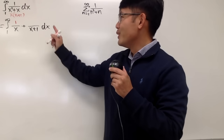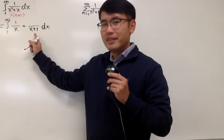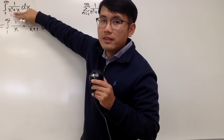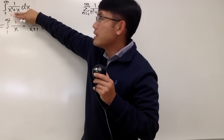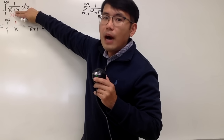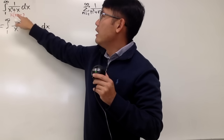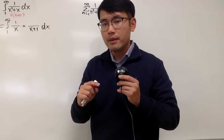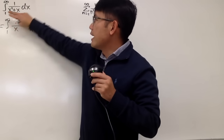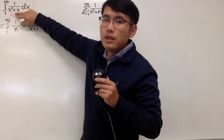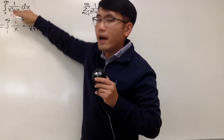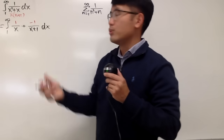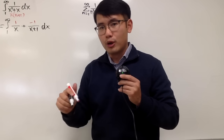Now we look at this right here. The denominator is x plus 1. We go back to the original and cover this out. We have to ask ourselves: how can we make x plus 1 equal to 0? In that case, x has to be negative 1. We put negative 1 into this x, so we end up with 1 over negative 1, which is negative 1. That's how you do the cover-up method for partial fractions.